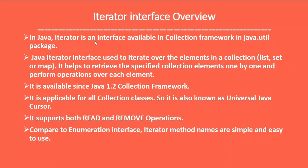So let's have a look at the overview of iterator. Iterator is an interface in Java, available in the collection framework and present in the java.util package. Iterator interface is used to iterate over elements in a collection such as list, set, or map, and it helps to retrieve the specified collection elements one by one and perform operations over each element. Iterator interface has been available since Java 1.2 collection framework.